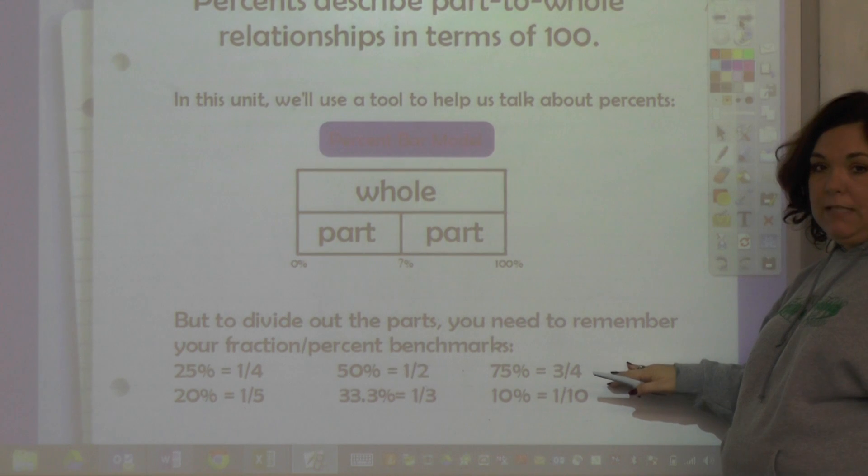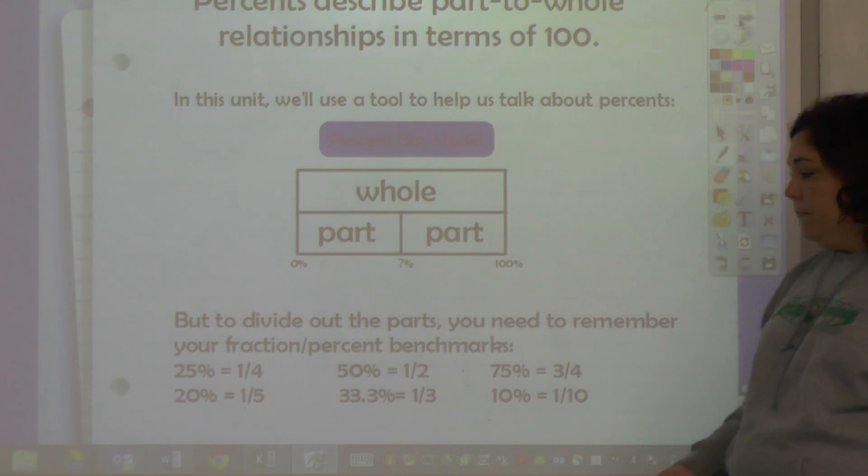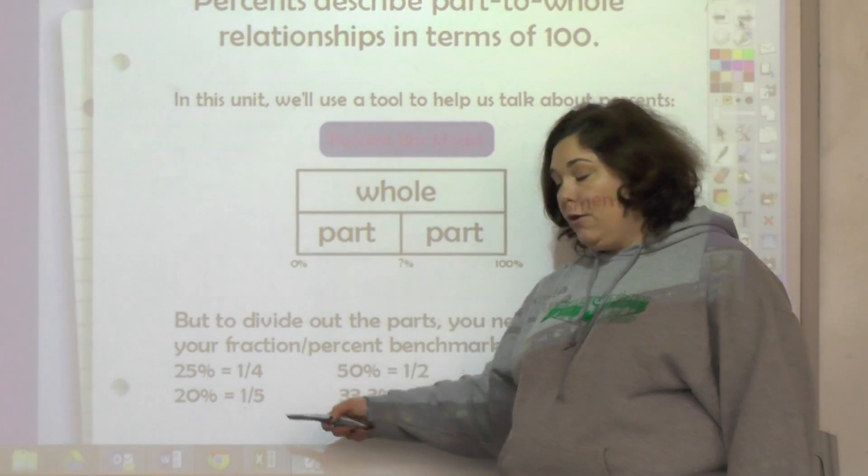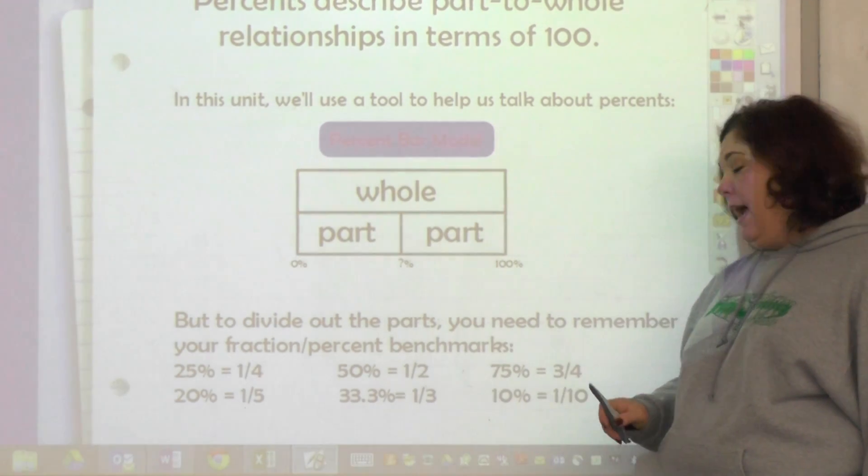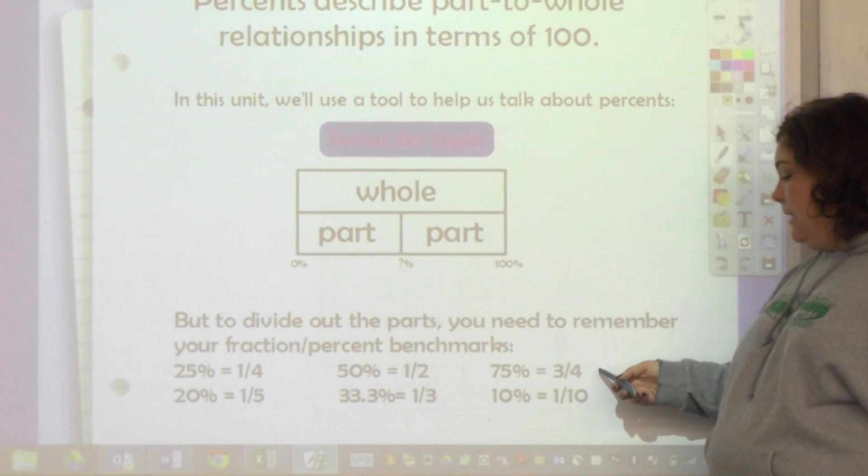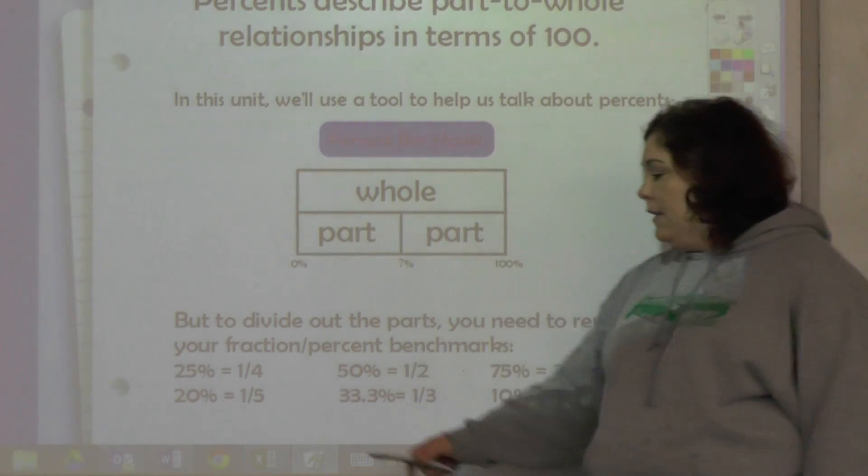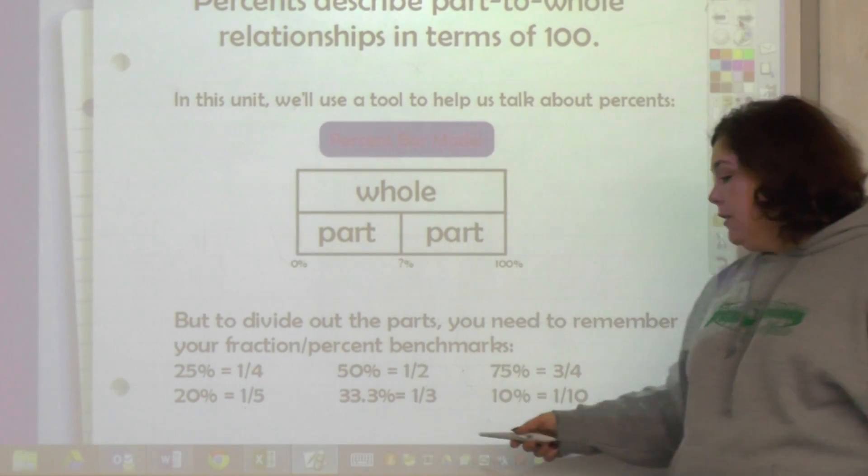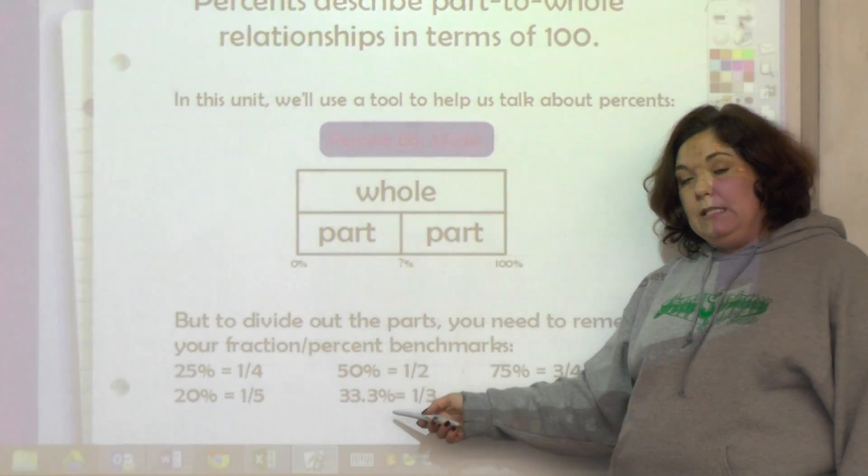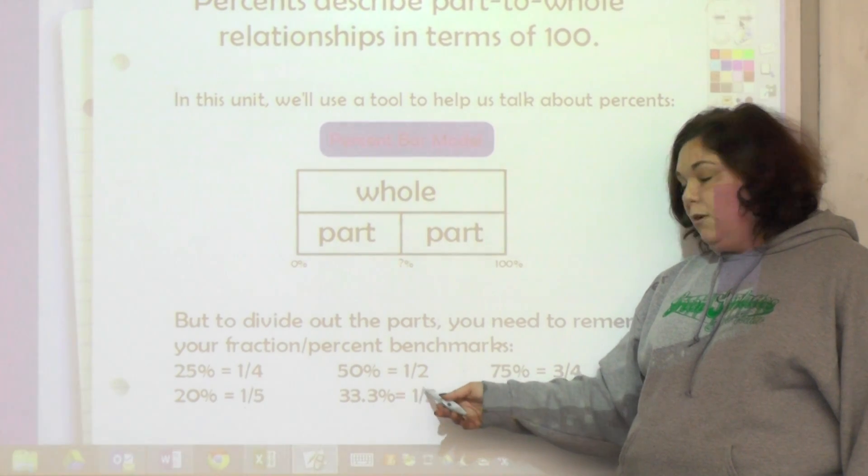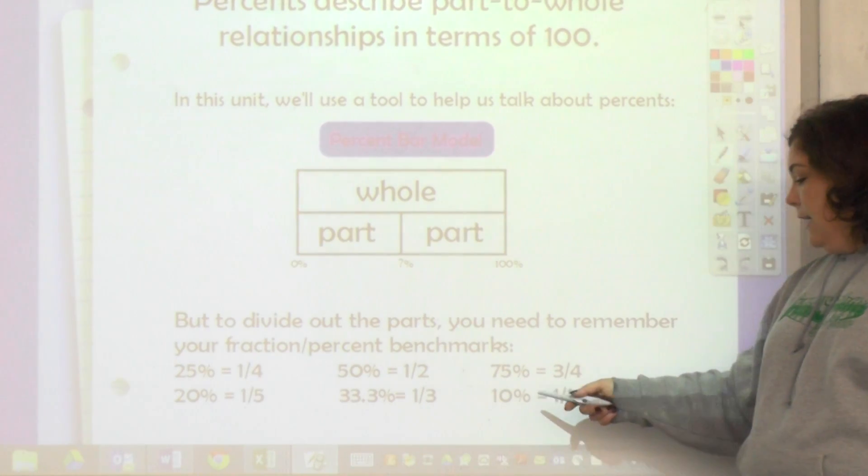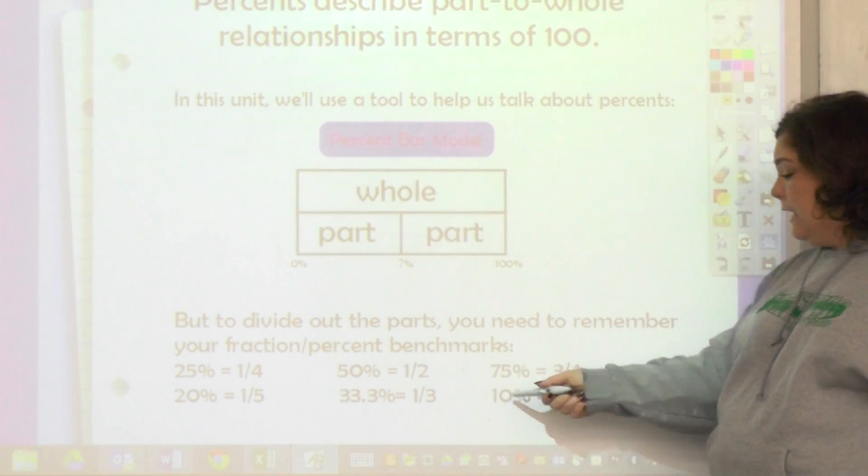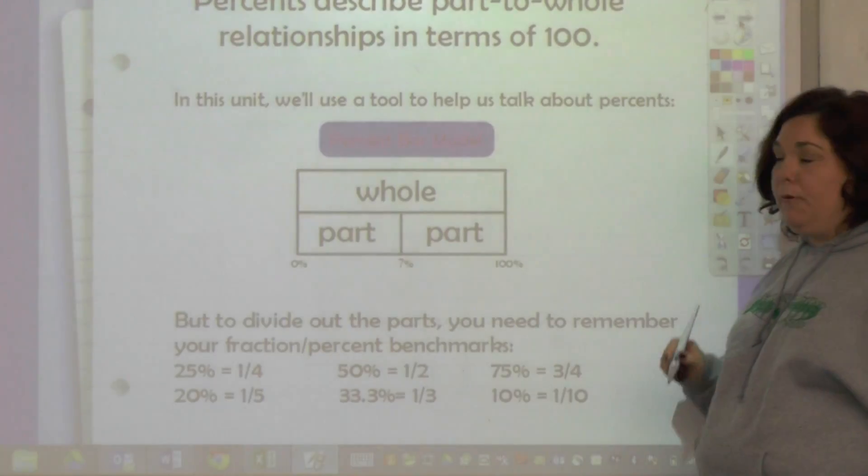These are the things that you're going to have to know to divide out the parts - you need to remember your fraction-percent benchmarks. You need to remember that 25% is equal to a fourth, that 50% is equal to a half, that 75% is equal to three-fourths, that 20% or multiples of 20 are worth fifths, and 33⅓% or 66⅔% is equal to a third or two-thirds, and 10% is equal to tenths. This is like 30% would be three out of ten parts.